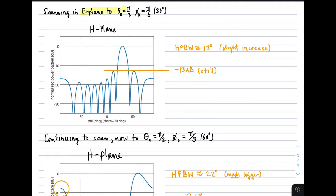Now, if we scan in the E-plane, we move that beam over to 30 degrees. Now the H-plane looks like this, where here is the main lobe, and here's 30 degrees. Now the half-power beam width is 12 degrees. That's a slight increase. The side-lobe level is minus 13 dB still. The reason it's still minus 13 dB is because to steer the beam, we only had to change the phases. And changing the phases across the aperture doesn't change it from being a uniformly excited aperture.